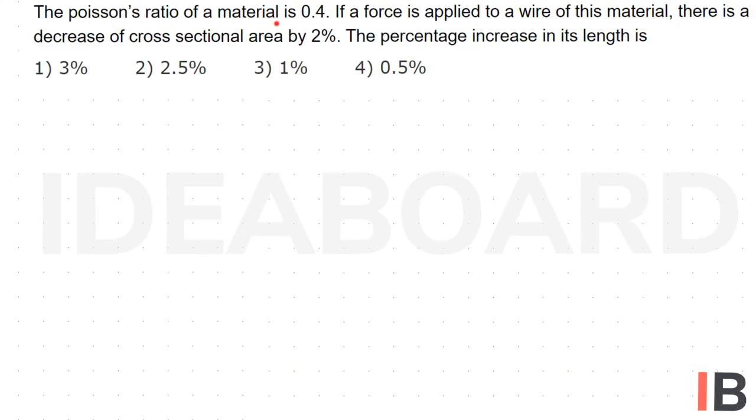The Poisson's ratio of a material is 0.4. If a force is applied to a wire of this material, there is a decrease of cross-sectional area by 2%. The percentage increase in its length is...